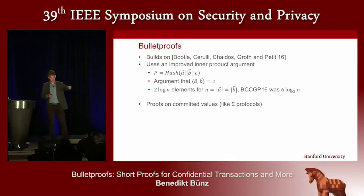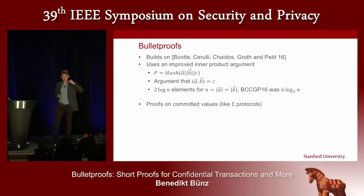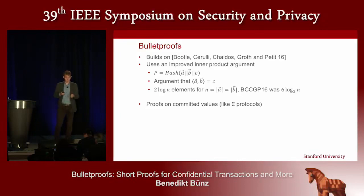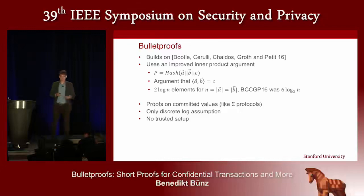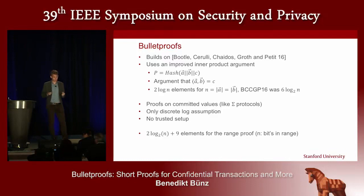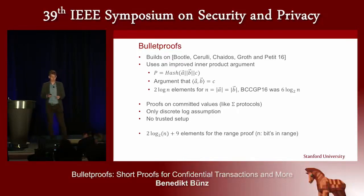We also enable proofs on committed values. In a confidential transaction, I have to prove that value X, which I previously committed to, is in some range. I can now directly do a proof on that statement rather than implementing the commitment or opening algorithm inside the proof system. It only relies on the discrete logarithm assumption and has no trusted setup. Overall, this leads to a range proof of 2 log n plus 9 elements, where n is the number of bits in the range.